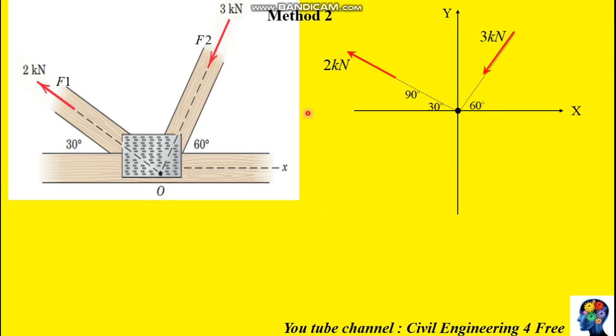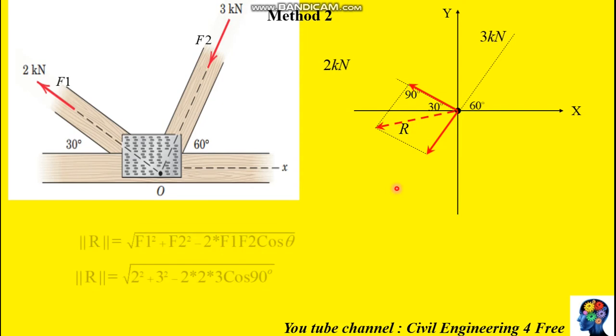The other method to calculate the resultant is to form a vector parallelogram and calculate the resultant. Once we construct a parallelogram, the diagonal of the parallelogram will represent the magnitude of the vector sum.